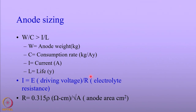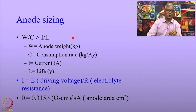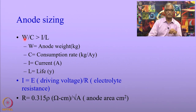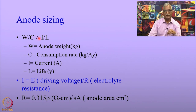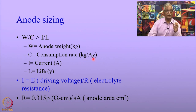Sizing of the anodes is very important when using sacrificial anodes. The anode weight required for cathodic protection is calculated based on the equation W/C ≥ I × L, where W is the anode weight, C is the current consumption rate in kg per ampere-year, I is the current required to protect the structure, and L is the life of the structure. This decides what the anode size should be in terms of weight.